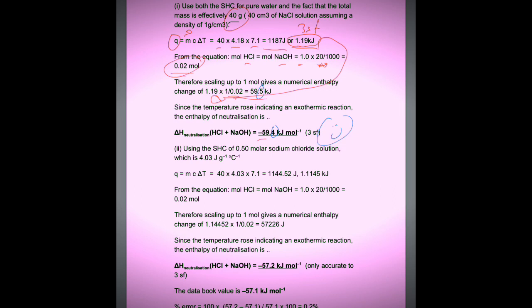Second part, if we use the specific heat capacity of sodium chloride, which is 4.03 rather than 4.18, we find it's 1144.52 joules or 1.1145 kilojoules. That's interesting. Using the specific heat capacity of sodium chloride, we times that energy by 1 over 0.02 to scale it up to moles.